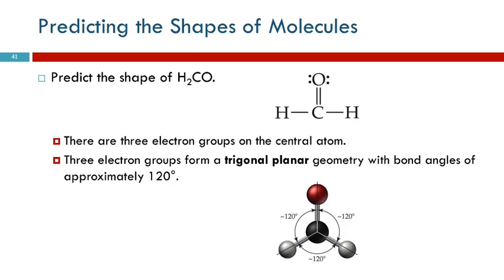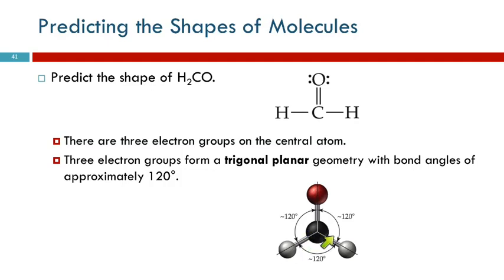Let's look at H2CO. We did this Lewis structure earlier. Looking at the carbon — how many electron groups? A single bond counts as a group, a double bond counts as one group, and this other single bond counts as one group. Three groups. How do three things get away from each other?